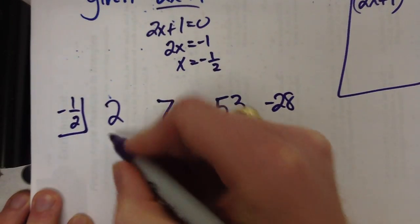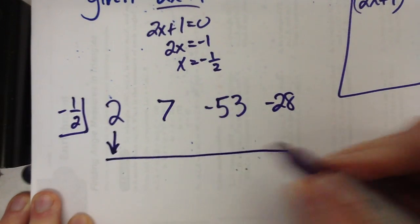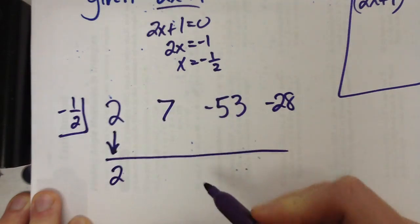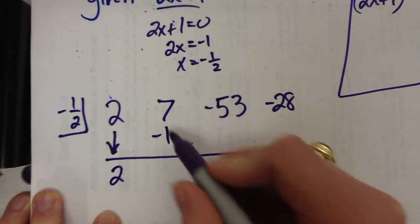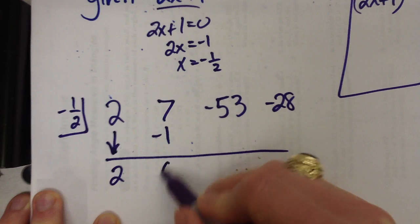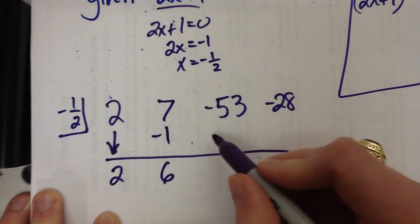All right. Bring down the 2. Multiply it by negative 1 half. That gives you negative 1. 7 minus 1 is 6. 6 times negative 1 half is negative 3.